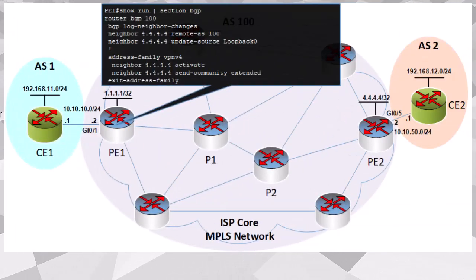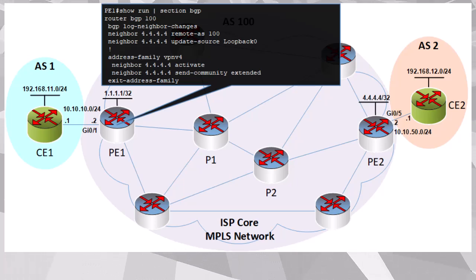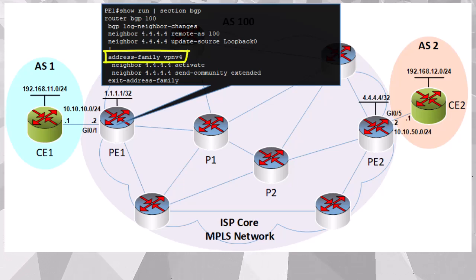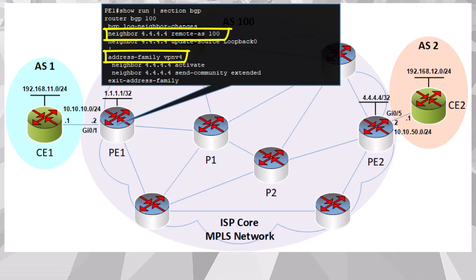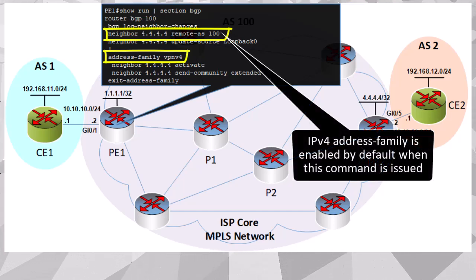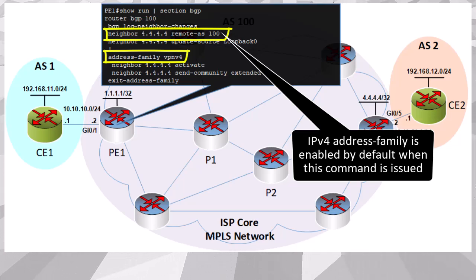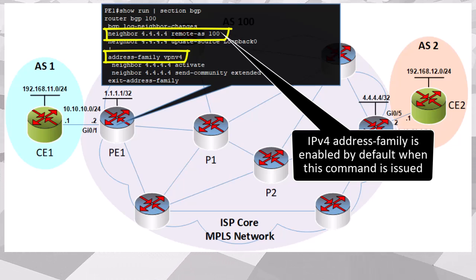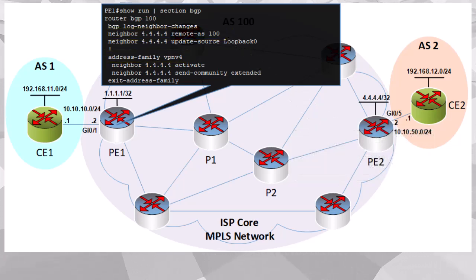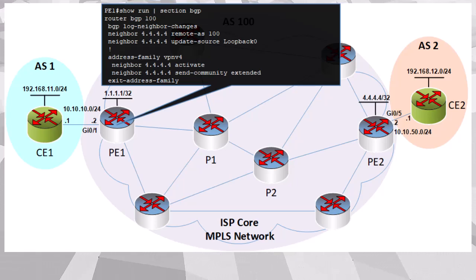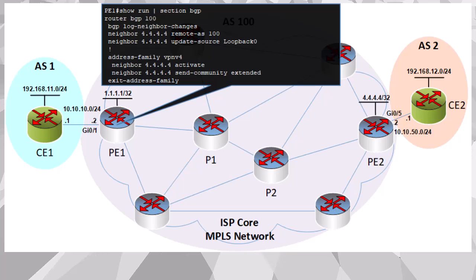Let's take a look again at the configuration of BGP as it appears within the PE1 and PE2 routers. This configuration, as it stands, allows PE1 and PE2 to exchange VPNv4 address family routes as well as IPv4 address family routes. The IPv4 address family is exchanged by default, so we don't actually have to explicitly enable it or configure the address family command for IPv4. But because label switching takes place on our MPLS network, we don't need to exchange IPv4 routes between PE1 and PE2.